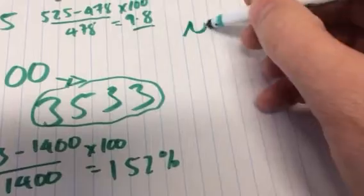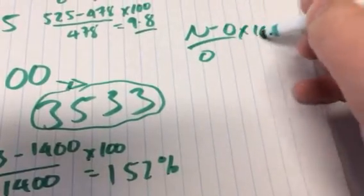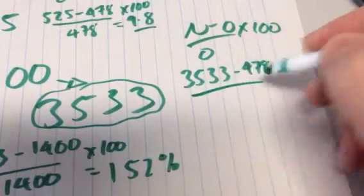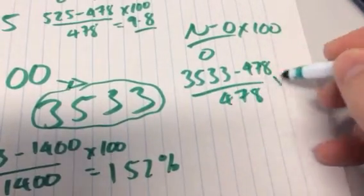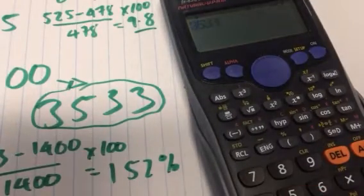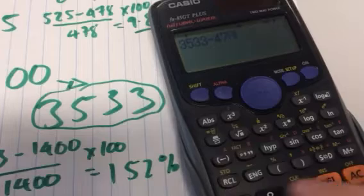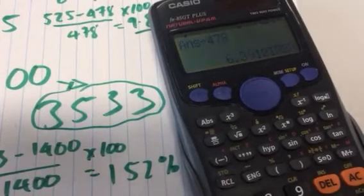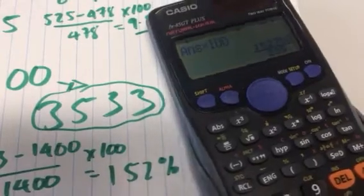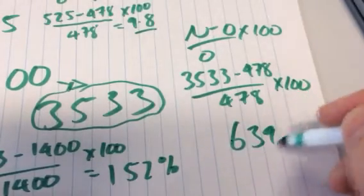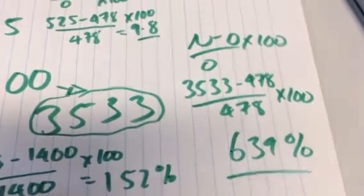So let's work that one out. Again, it's new minus old over old times 100. So 3533 minus 478 over 478 times 100. So we go 3533 minus 478, divided by 478, times 100. And we get 639% change in the last 10 days.